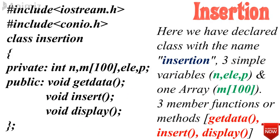Defining class insertion with data members and member functions. Data members include n to know the size of the array, m of 100 to save elements in memory, ELE to store the new element to insert, and P to store the array memory position for insertion.